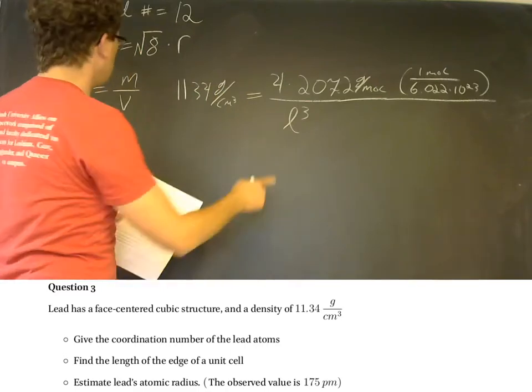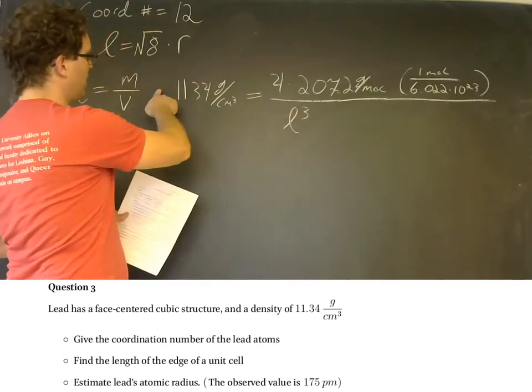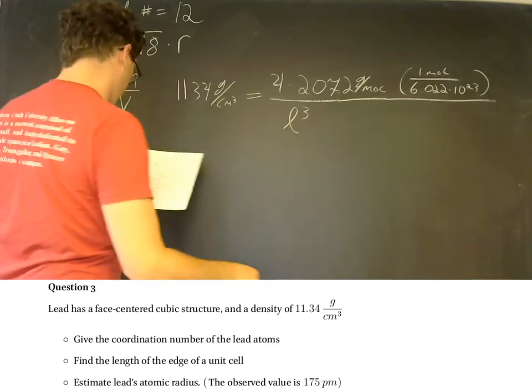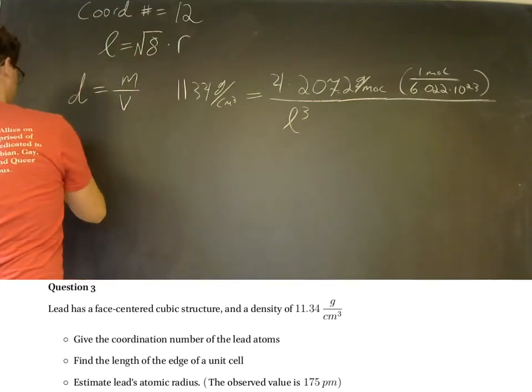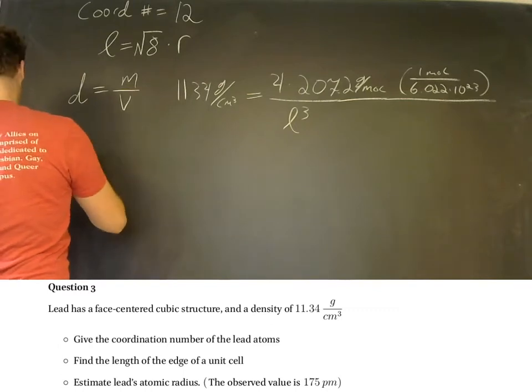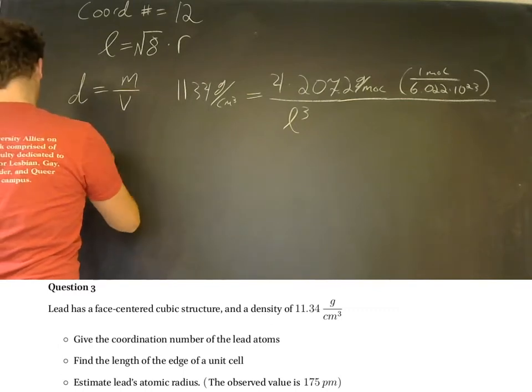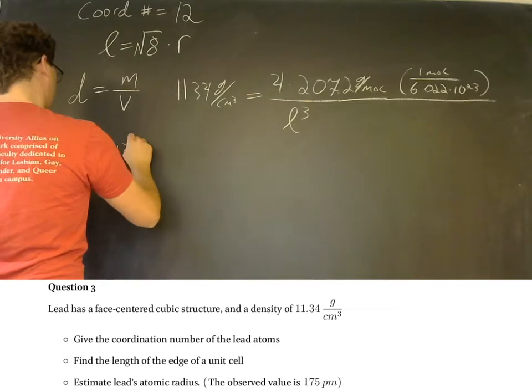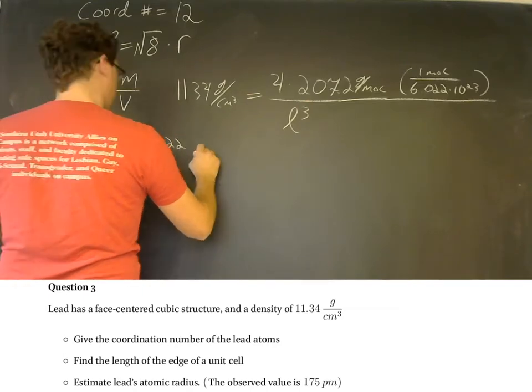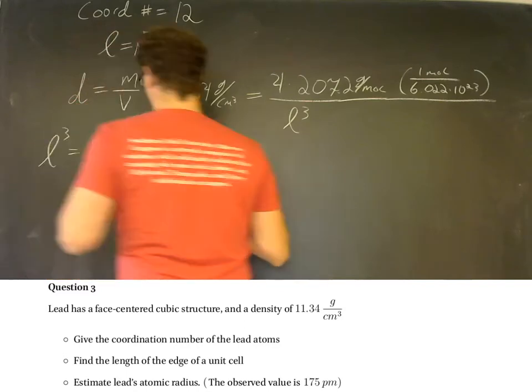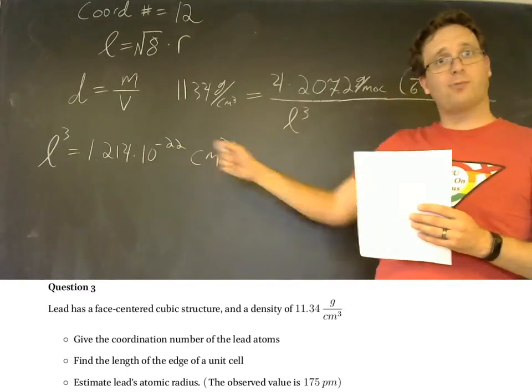So what we'll do is put the l cubed over here, 11.34 over there, and solve that. So l cubed is going to equal 1.214 times 10 to the negative 22nd centimeters cubed. That is the volume of a unit cell.